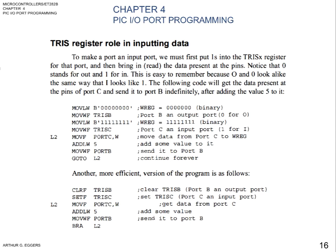This is easy to remember because an O and a 0 look alike, the same way that an I looks like a 1. The following code will get the data present at the pins of port C and send it to port B indefinitely after adding the value of 5 to it.